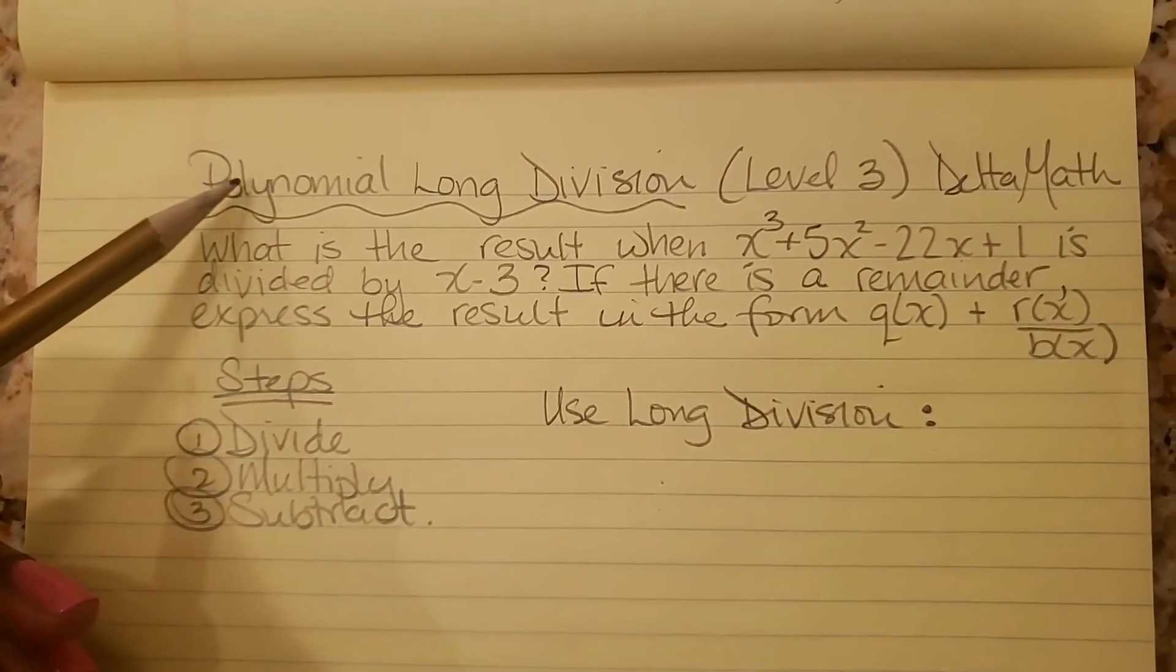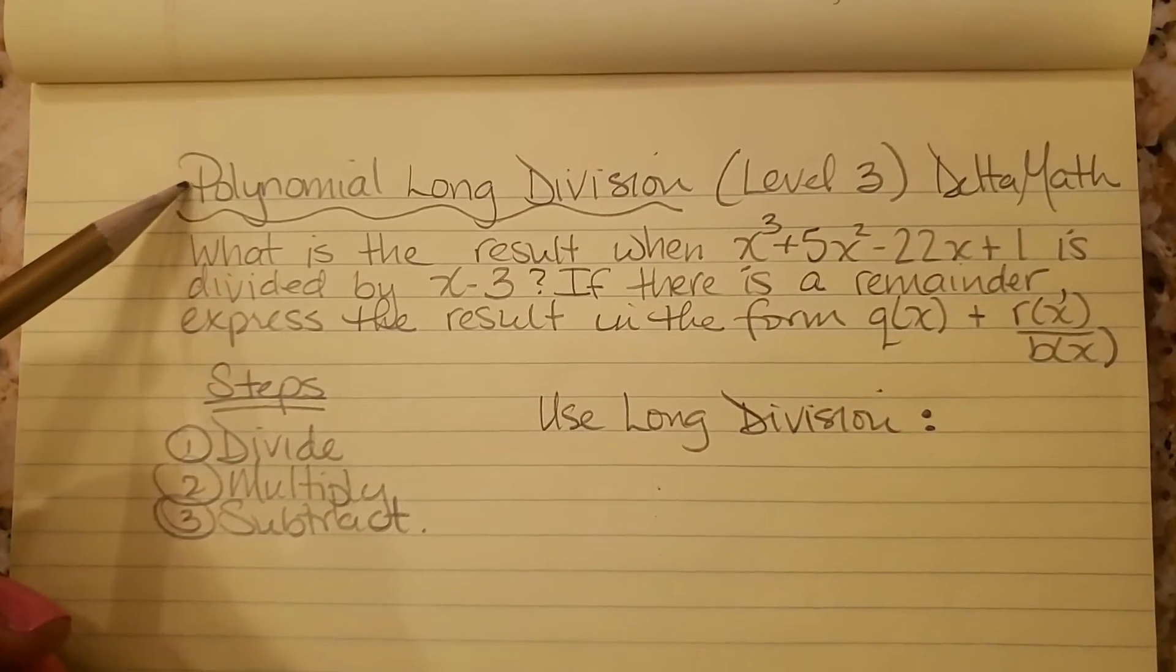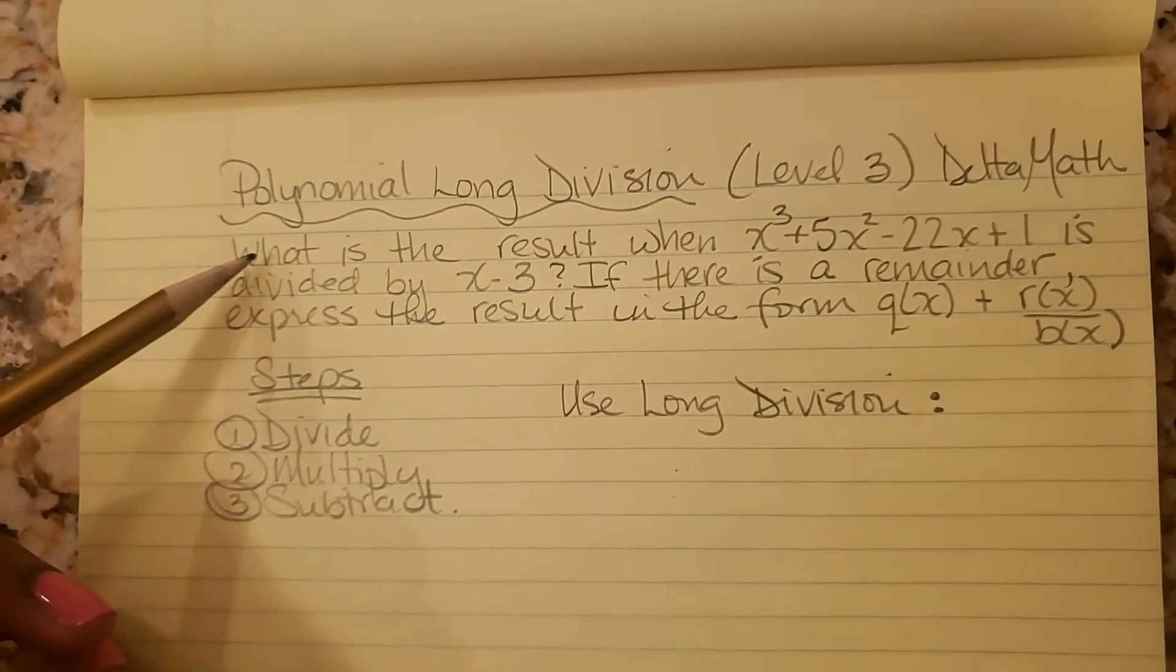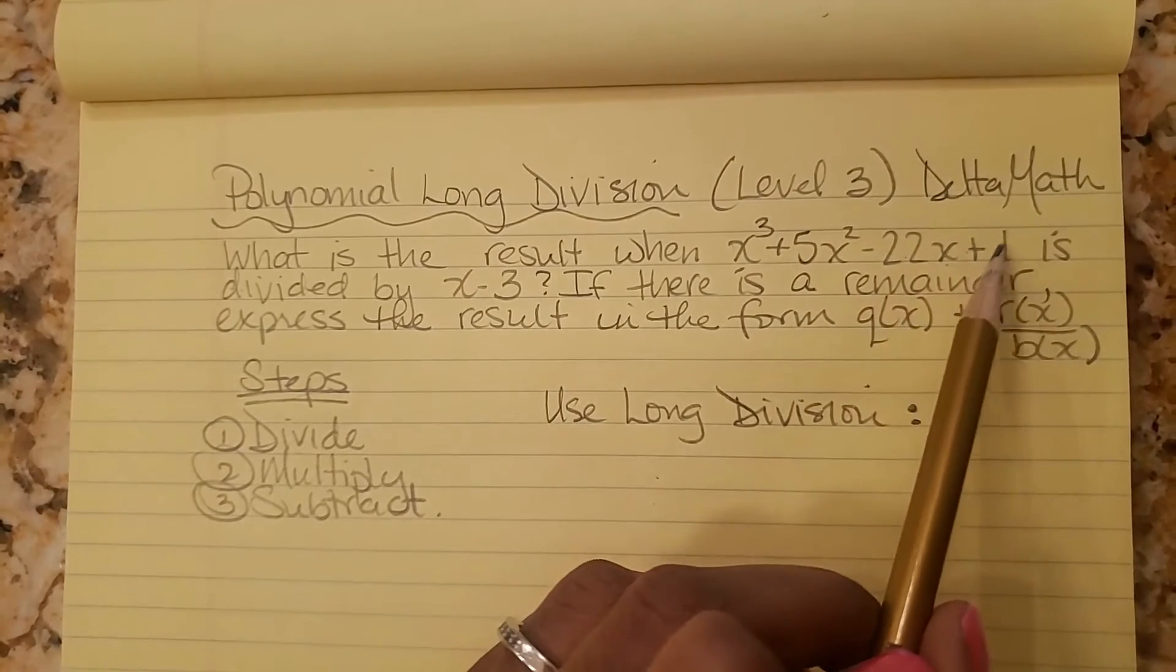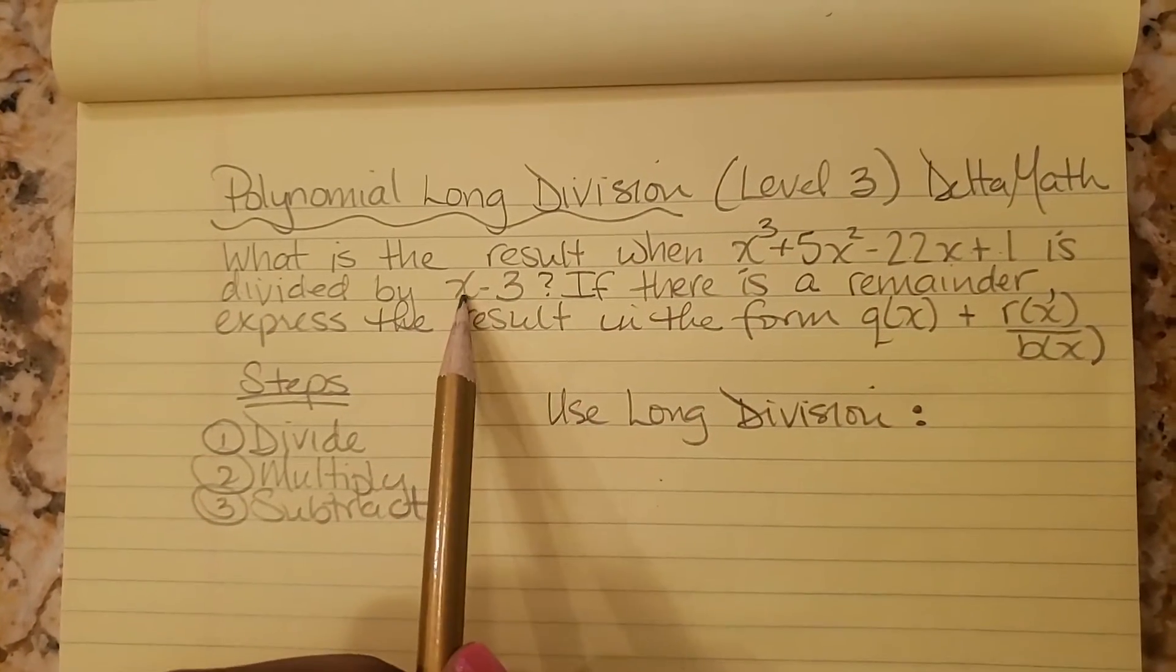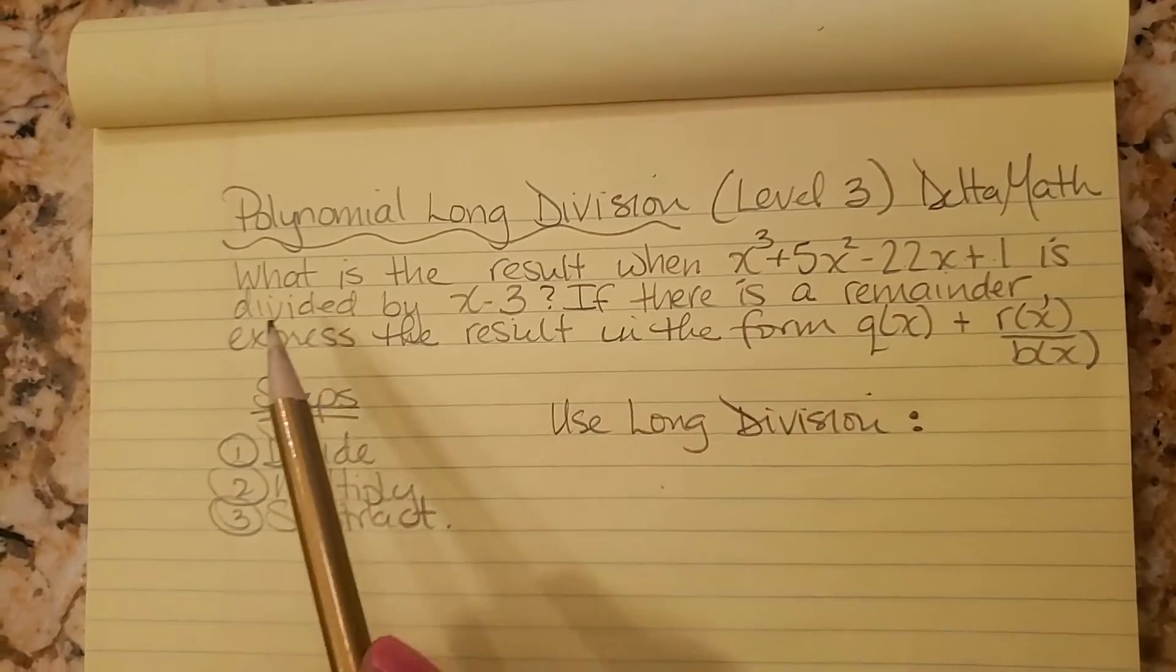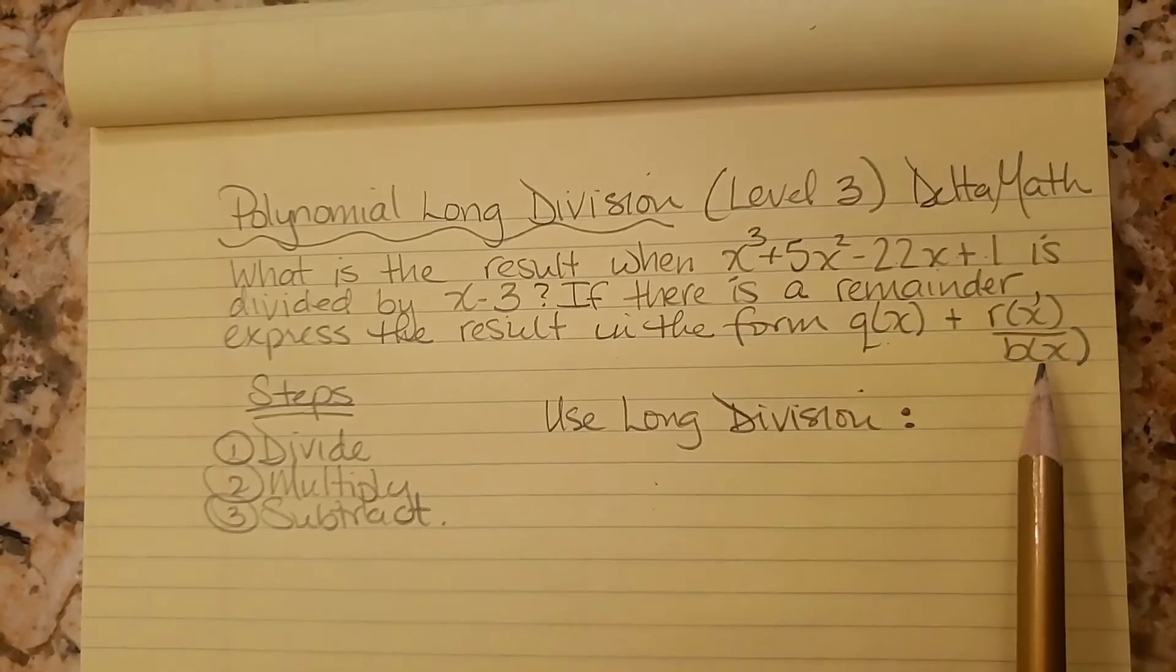This one is polynomial long division level 3 from delta math. The question is what is the result when x cubed plus 5x squared minus 22x plus 1 is divided by x minus 3? If there is a remainder, express the result in the form q(x) plus r(x) over b(x).